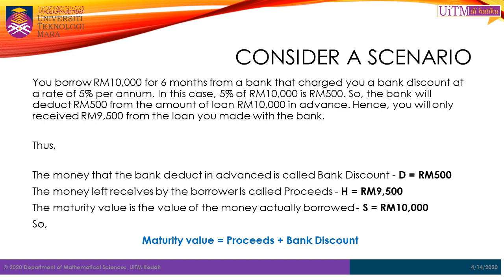Thus, the money that the bank deducts in advance is called bank discount, denoted as D, which equals RM500. The money received by the borrower is called proceeds, denoted as H, which equals RM9,500. And the maturity value is the value of the money borrowed, denoted as S, which equals RM10,000. So we have the relationship: maturity value equals proceeds plus bank discount.